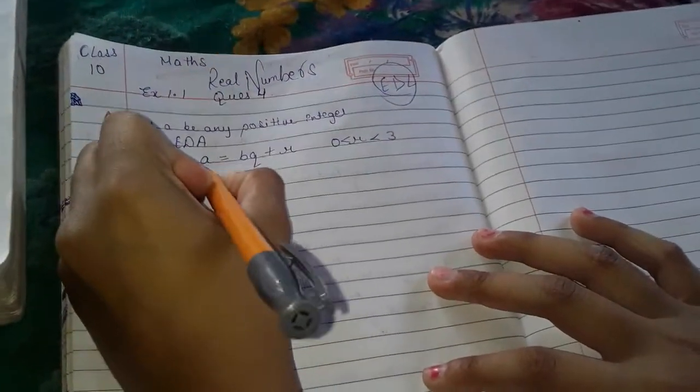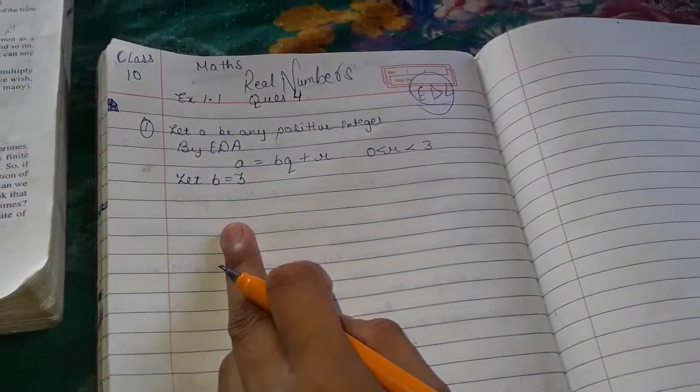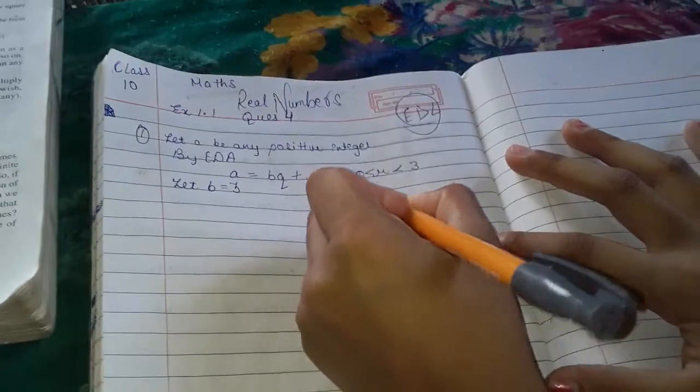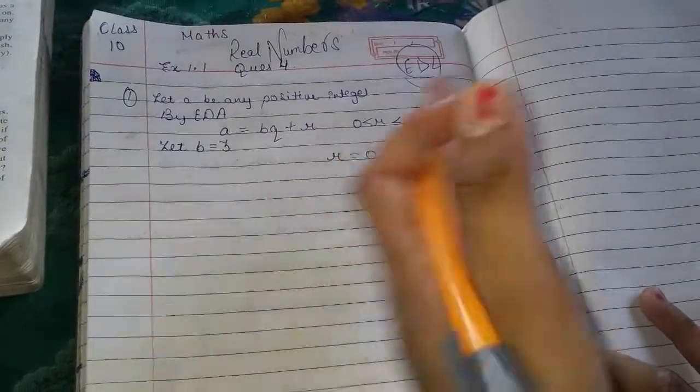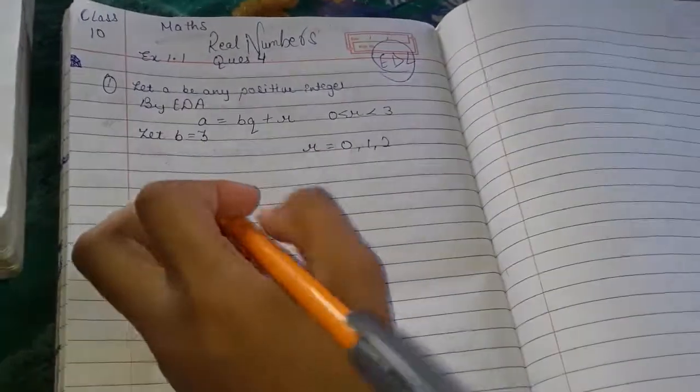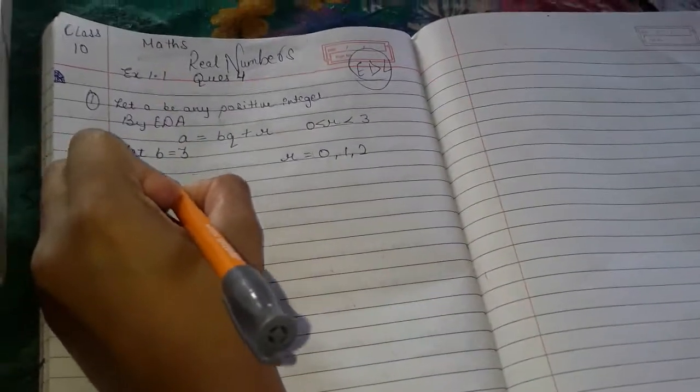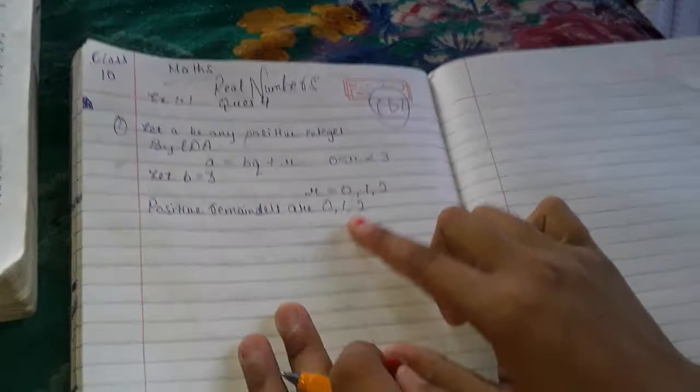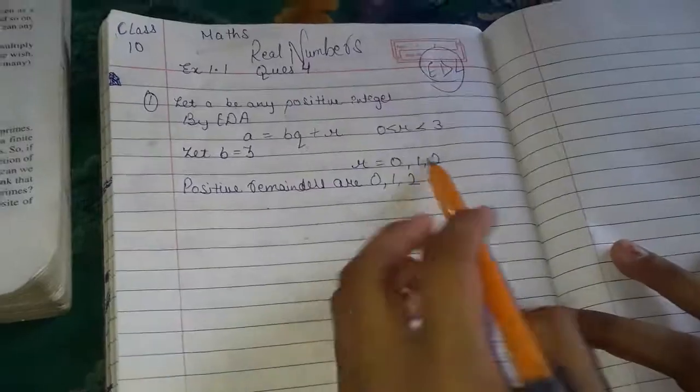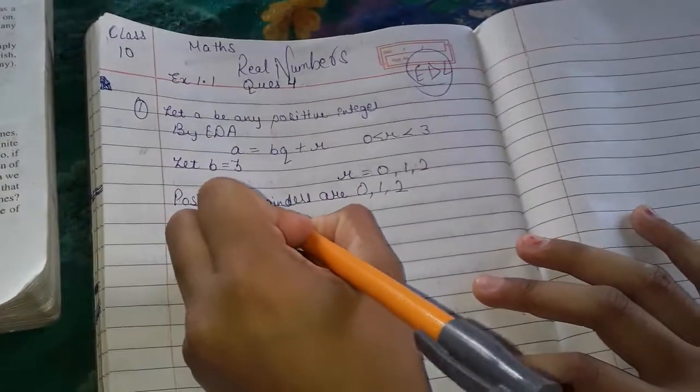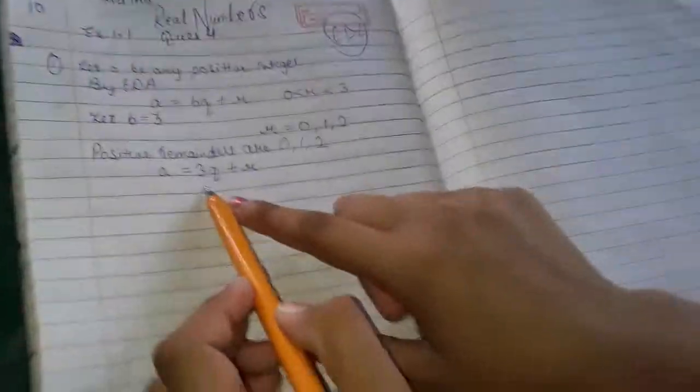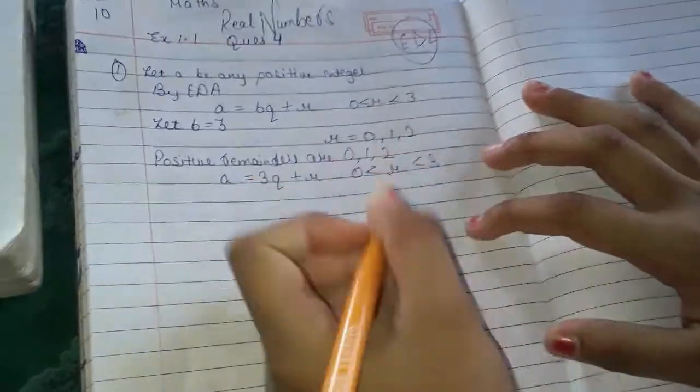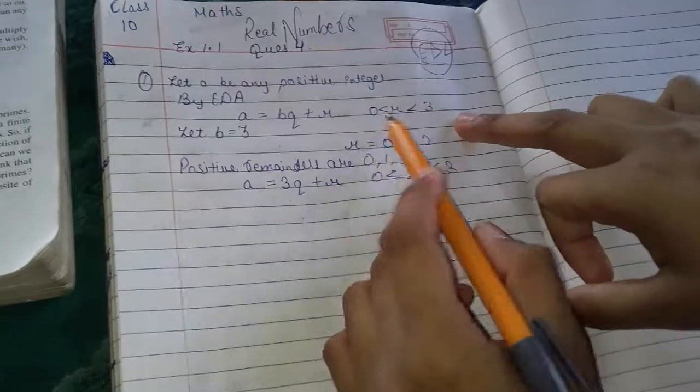Let B is equals to 3. The remainder can be 0, 1, or 2, since 0 is less than or equal to R which is less than 3. So the possible remainders are 0, 1, 2. B is always greater than R.